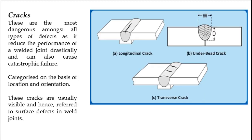Starting with the first type of weld defect: cracks. Cracks are the most dangerous amongst all types of defects because welded structures most of the time fail through cracking. The different types of cracks are categorized on the basis of location and orientation. If the crack is along the axis of the weld, we call it a longitudinal crack. If cracks are perpendicular to the direction of welding, we call it a transverse crack. If the cracks are beneath the bead, we call it an under-bead crack.